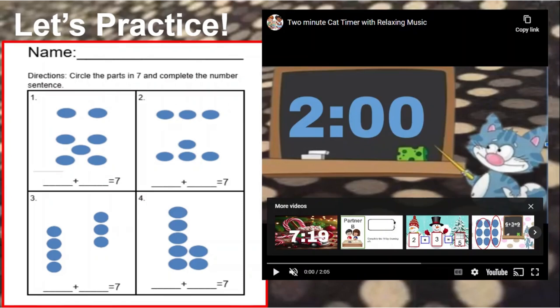I want you to circle the two parts of seven. Circle the two parts and write the missing numbers in the number sentences. You have two minutes.